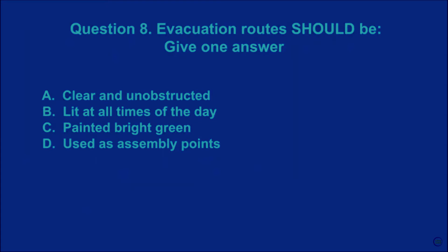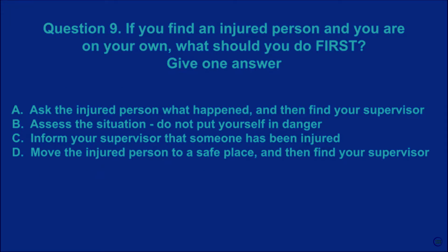Question 8: Evacuation routes should be — give one answer. A: clear and unobstructed. B: lit at all times of the day. C: painted bright green. D: used as assembly points. The correct answer is A.